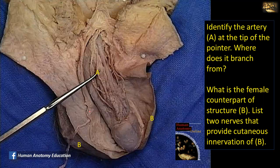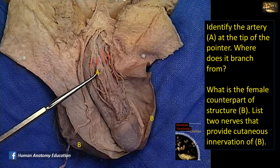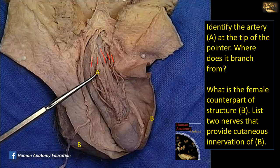Identify artery A at the tip of the pointer and where does it branch from. Here is the penis, the glans of the penis, and dissection of the dorsum of the penis. There is a vein — the deep dorsal vein of the penis — flanked on either side by an artery, and more laterally a nerve. The artery is the dorsal artery of the penis, actually a continuation of the internal pudendal artery. The internal pudendal artery originates from the internal iliac artery, and the dorsal artery of the penis is a branch of the internal pudendal artery.